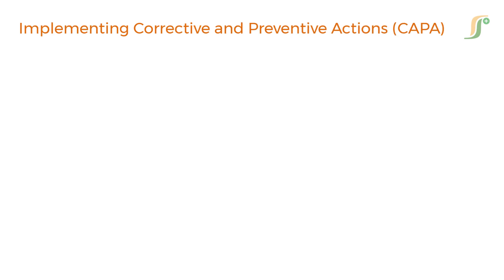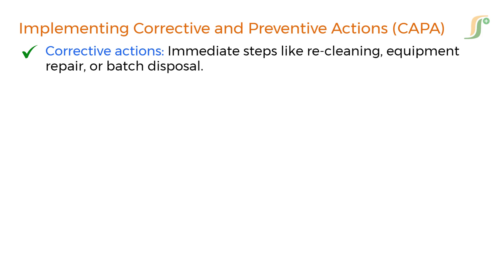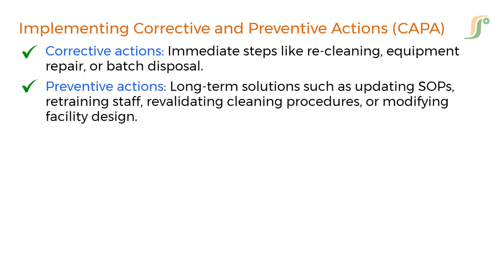Once the root cause is identified, the next step is implementing corrective and preventive actions (CAPA). Corrective actions are immediate steps like recleaning, equipment repair, or batch disposal. Preventive actions are long-term solutions such as updating standard operating procedures, retraining staff, revalidating cleaning procedures, or modifying facility design. It is essential that CAPA actions are documented thoroughly, reviewed for effectiveness, and monitored over time to ensure sustained compliance.